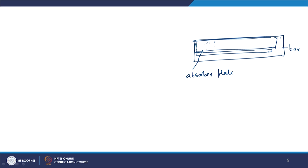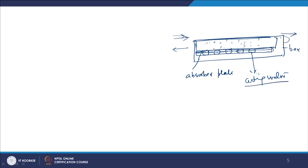We can pack the bed with some absorbing material, known as a packed bed collector. If the working fluid is air entering from one side and leaving from the other, that is single pass; if air enters and takes a U-turn and comes back, it is double pass. Some collectors have tubes through which the working fluid flows, and heat from the absorber is taken away by cooling water.